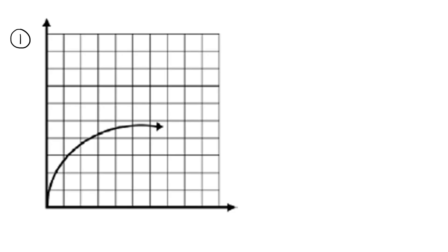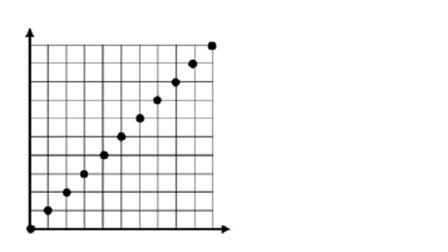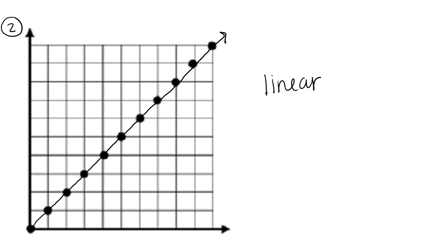For number one, it is nonlinear because that graph curves — it is not a straight line. For number two, even though the graph is in points, if you were to connect the dots, it would make a perfectly straight line, and so it is linear.